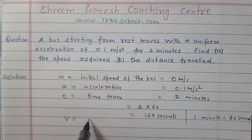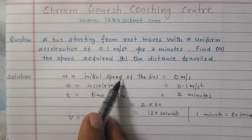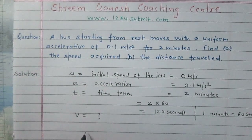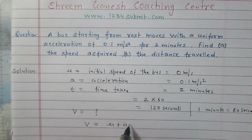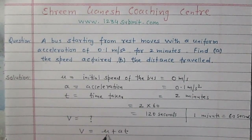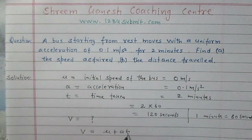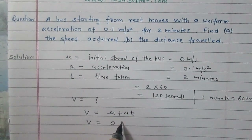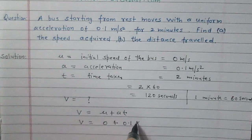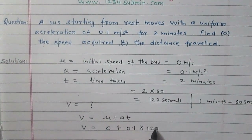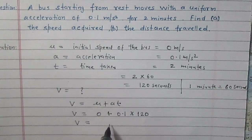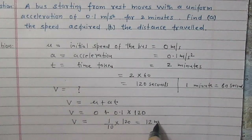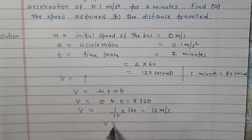We need to find v, the final speed. Using Newton's equation v equals u plus at: v is the final speed, u is initial speed, a is acceleration, and t is time. Here u is zero because the body was at rest, a is 0.1 meter per second square, and t is 120 seconds. Calculating: 0.1 times 120 gives 12 meter per second. So the speed acquired by the bus is 12 meter per second after 2 minutes.